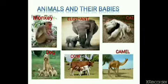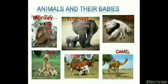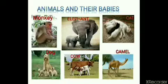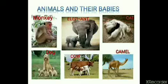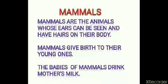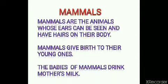Children, observe these pictures carefully. Can you see some similarities in these animals? Yes, you can see the ears of all these animals. All of them have hairs on their body and these animals give birth to their young ones. Such type of animals are called mammals. Mammals are the animals whose ears can be seen and have hairs on their body. Mammals give birth to their young ones. The babies of mammals drink mother's milk.